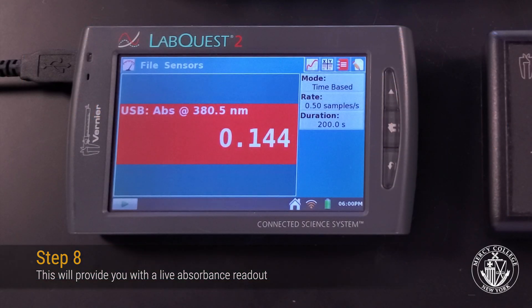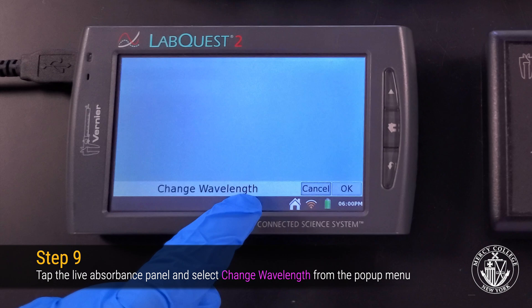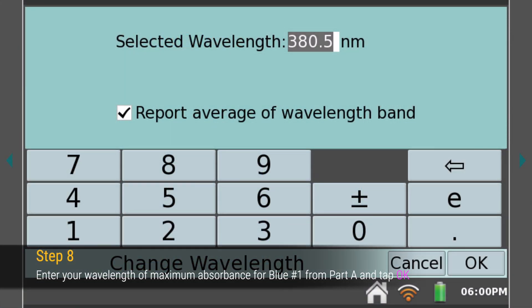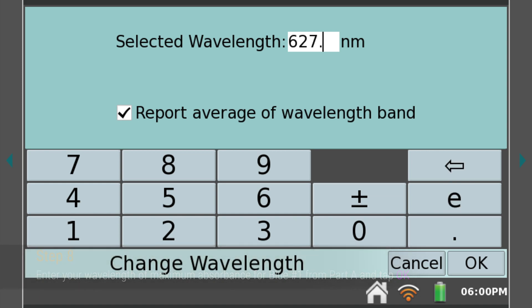Now tap the absorbance panel and select Change Wavelength. To analyze the amount of blue 1 dye in each of our samples, we need to set the wavelength to the lambda max wavelength for blue 1 from Part A of the experiment.